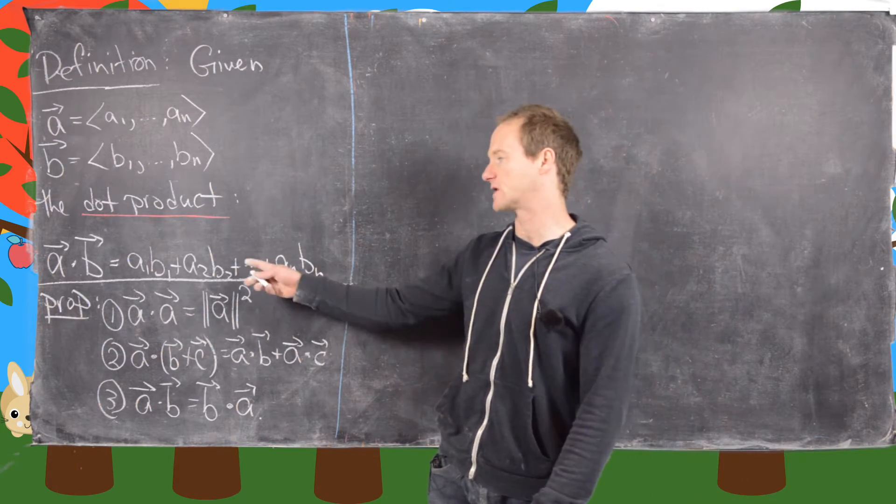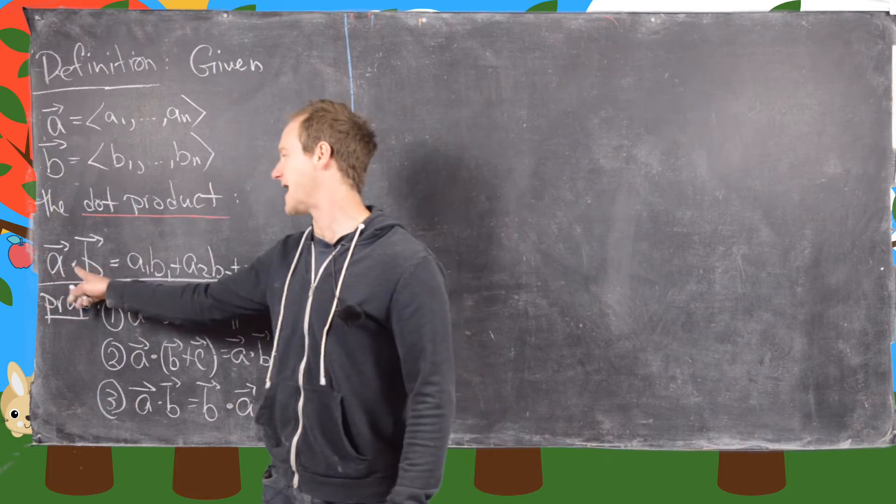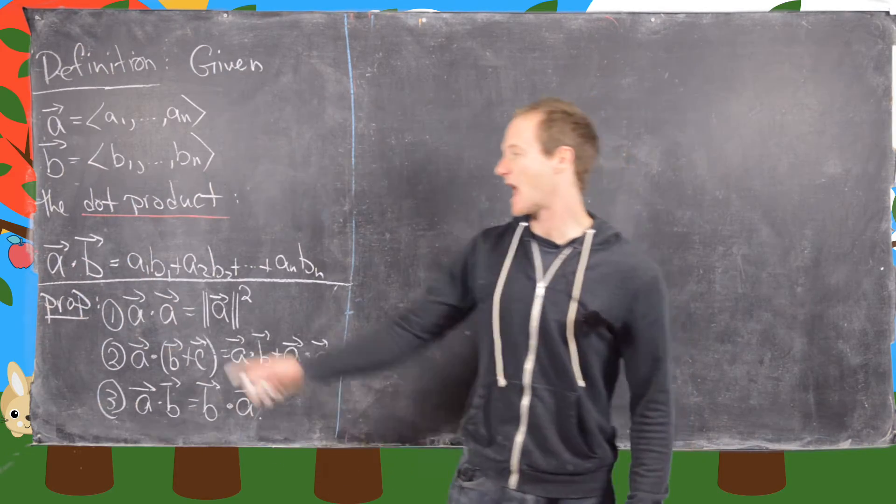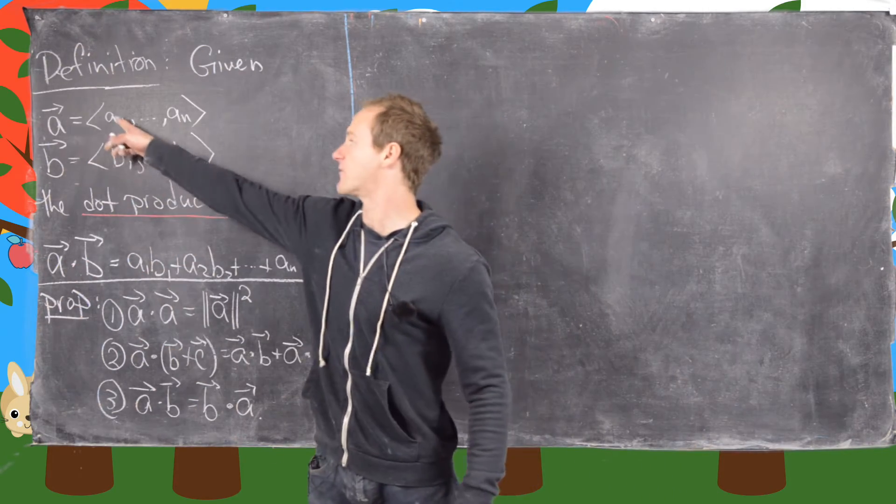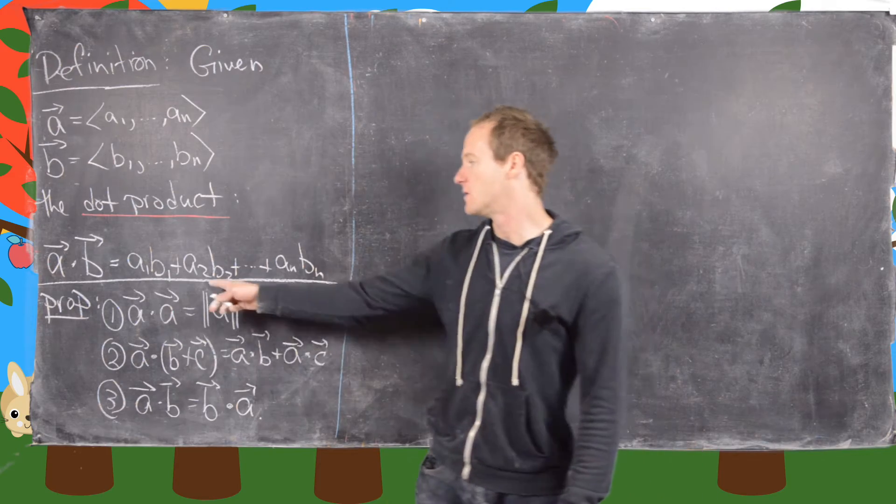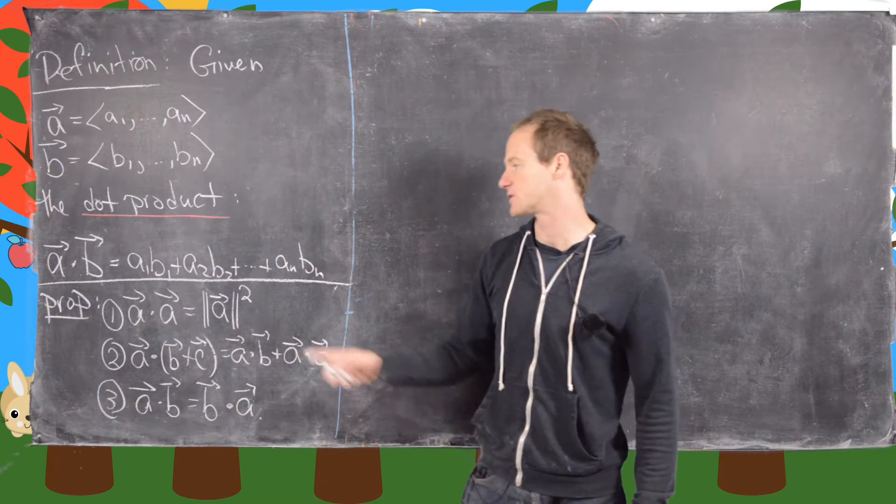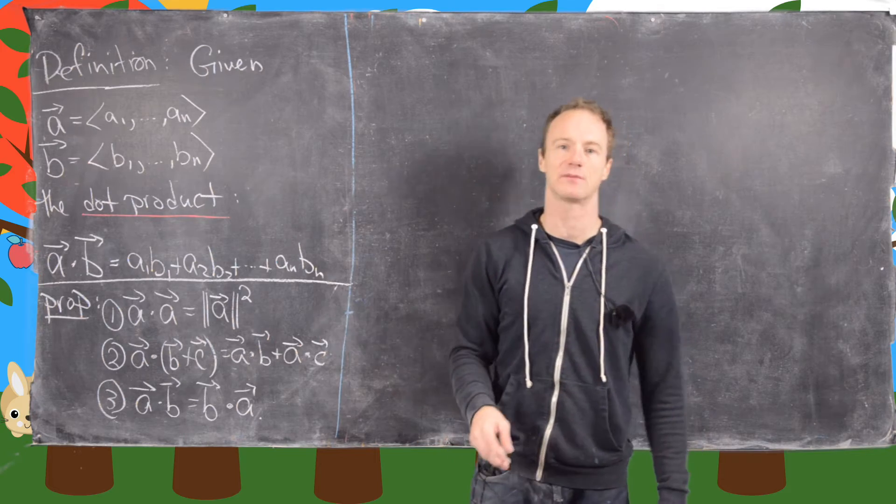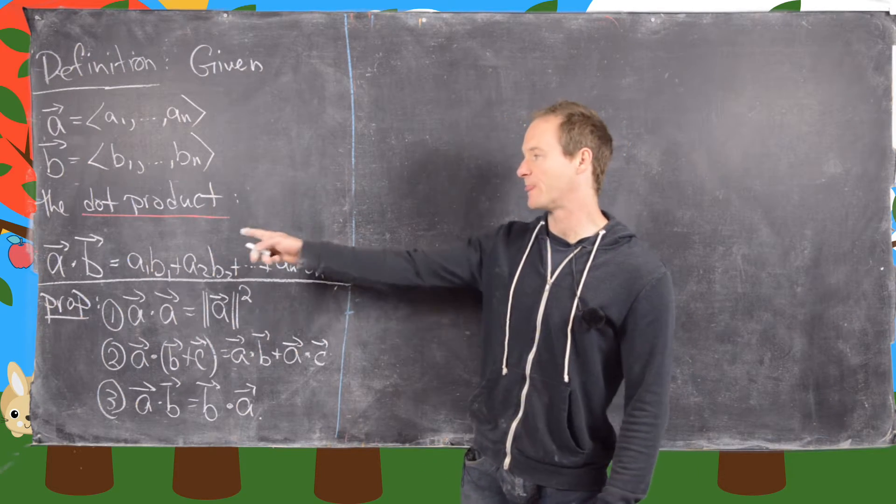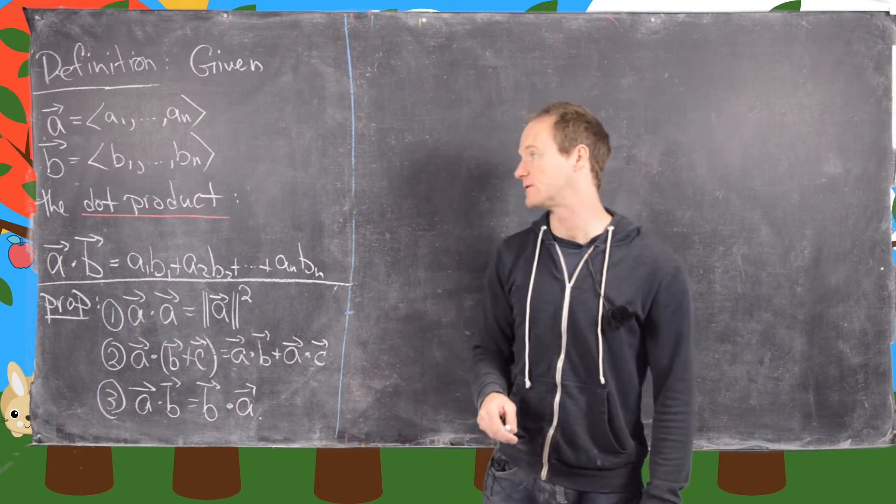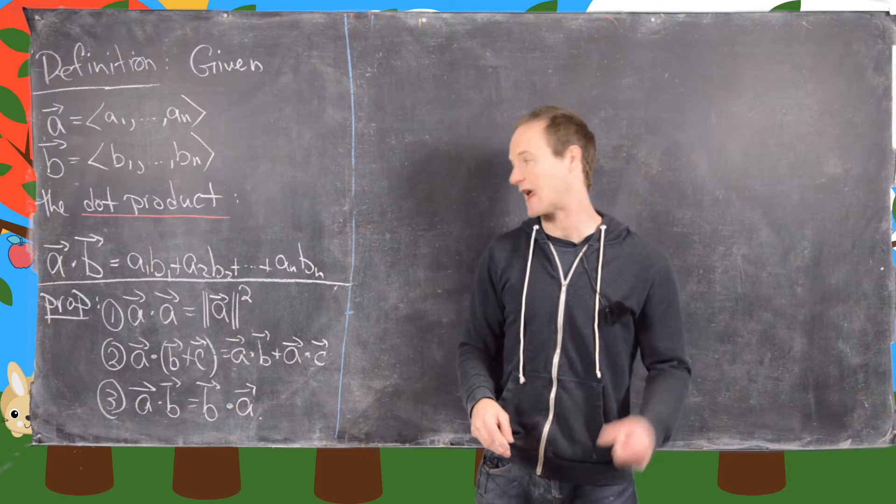The dot product of A and B, which we'll denote by A dot B, is A1 times B1. In other words, the first component is multiplied, plus A2 times B2, so the second component is multiplied, all the way up to AN plus BN. So notice the output of the dot product of two vectors gives you a scalar.